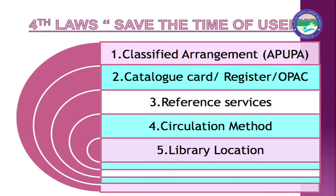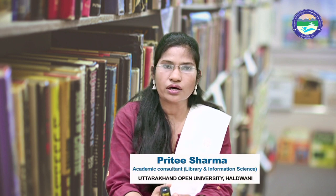Now let's talk about Circulation Method. The issue-return method should be addressed so that users don't face long queues. We can open self-return counters and increase the number of circulation counters so that we save the time of the user.